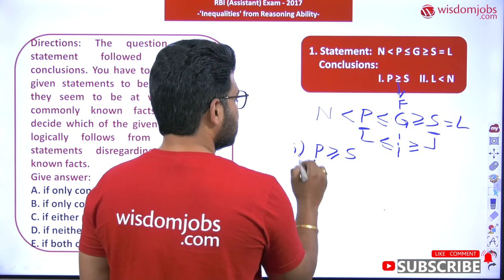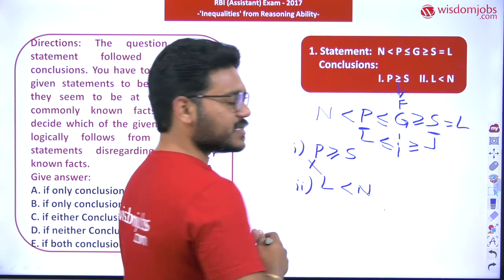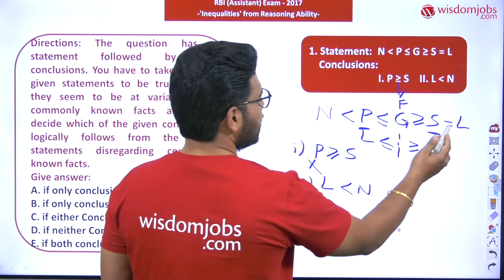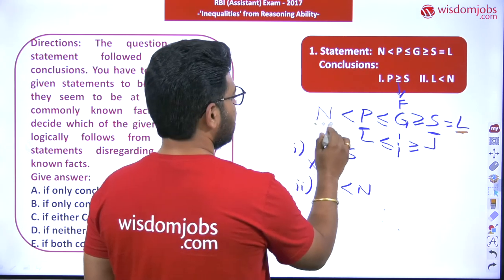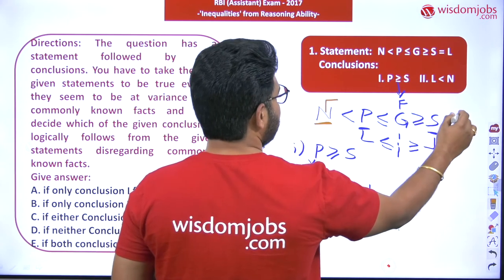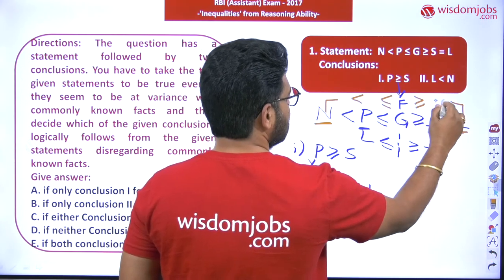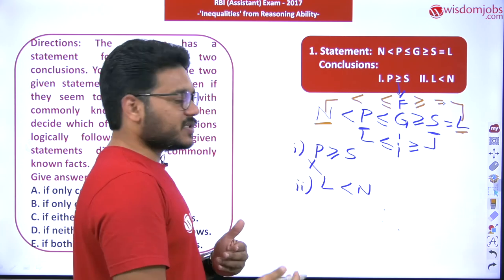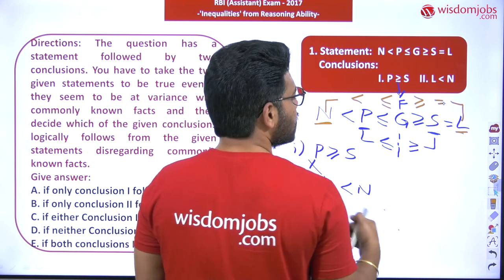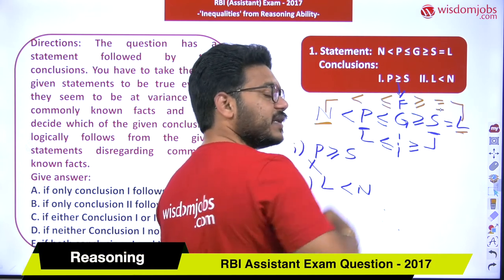Now let us check the second conclusion: L less than N. Identify where L and N are in the statement. The symbols in between are 'greater than or equal to' and 'equal to.' Going from L towards N, you first pass through 'equal to,' which passes easily, then 'greater than or equal to,' which also passes through.